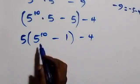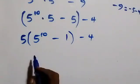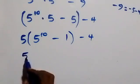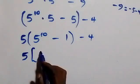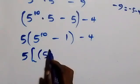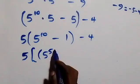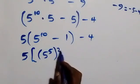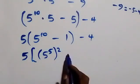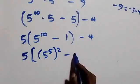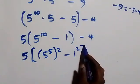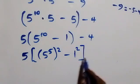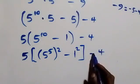The next step: we can rewrite the exponent 10 as 5 times 2. This becomes 5 into bracket: 5 raised to power 5, then raised to power 2, minus 1 squared, close bracket, minus 4.